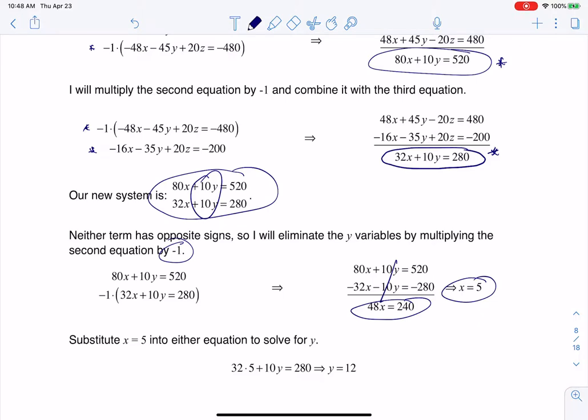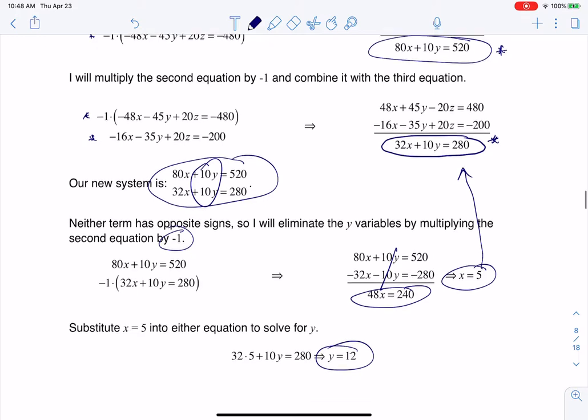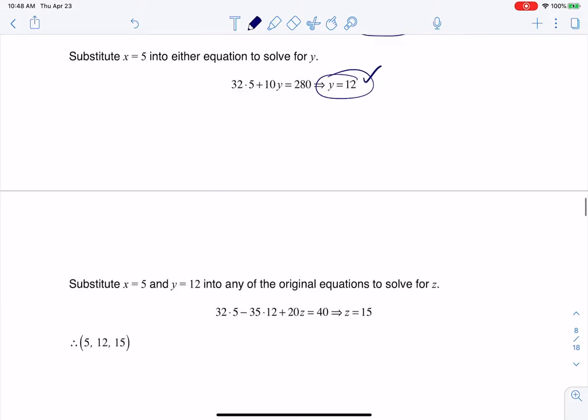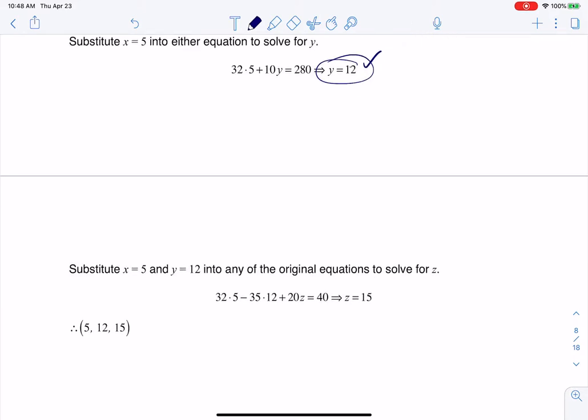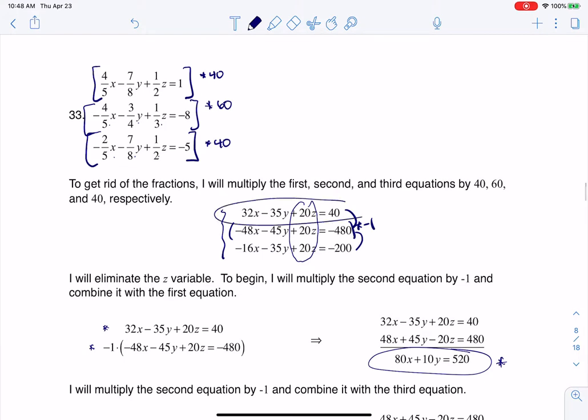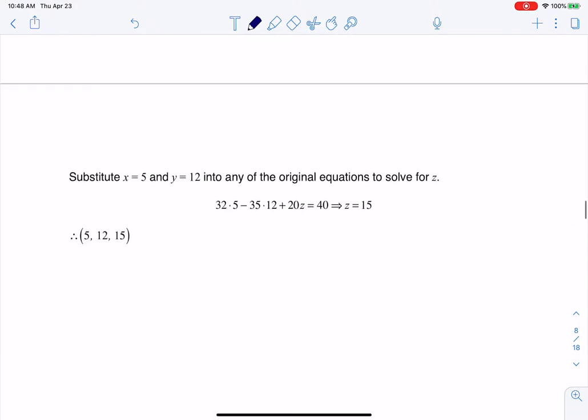And then it's a matter of back subbing. So I take that 5, and I can plug it into any equation I want. I'm just going to plug it into that one. When I plug in X equaling 5, I get Y is 12. And then I can take the fact that X is 5 and Y is 12 and plug it into any of my original equations. And if I scroll all the way back up here, I wind up plugging it into this first one. That's the work that you see going on here. And I get the Z is 15.